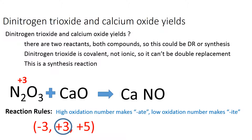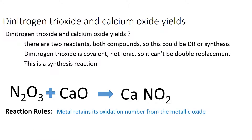Our reaction rules tell us that this must then be nitrite, and nitrite is NO₂⁻. We need to do a crisscross to make sure we have this formula correct. The reaction rules tell us that the metal retains its oxidation number, so it's still plus two. Nitrite is minus one — we crisscross — and we have Ca(NO₂)₂.